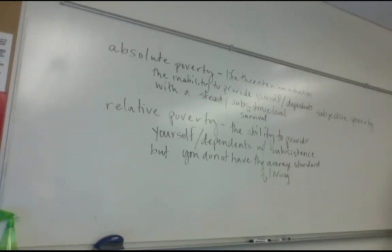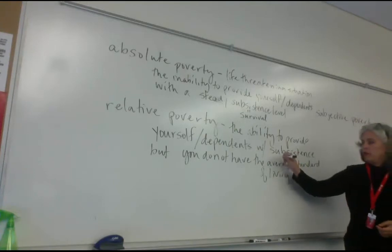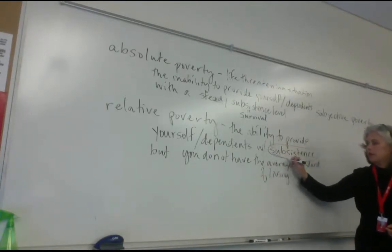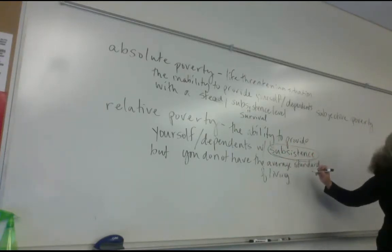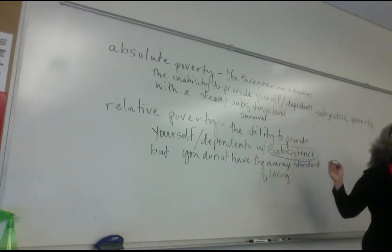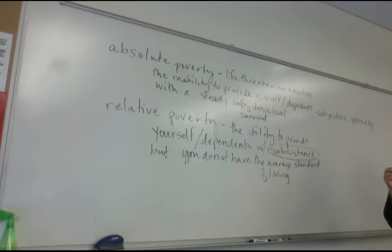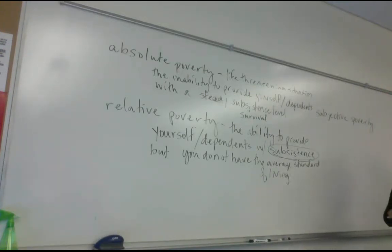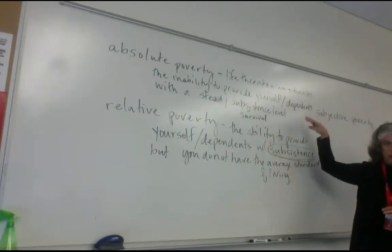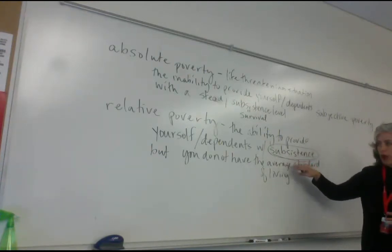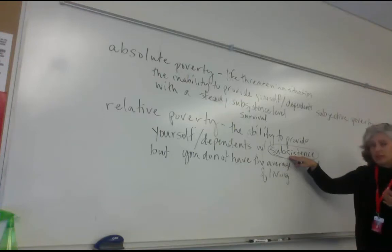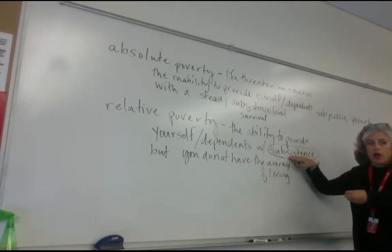Food stamps help with getting subsistence. A housing voucher helps with subsistence. The food bank helps too. What separates relative from absolute poverty is that in relative poverty you still have resources — whether a paycheck or a WIC card — to access subsistence. In absolute poverty you have no resources to help you.